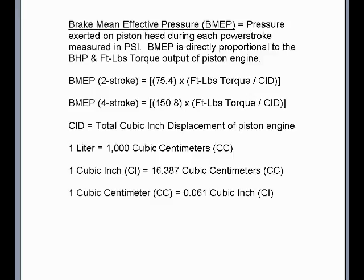The same is true for the four-stroke engine, except you multiply the ratio of foot-pounds torque output at a given RPM divided by the cubic inch displacement times 150.8. CID stands for total cubic inch displacement of a piston engine. One liter equals 1,000 cubic centimeters. One cubic inch equals 16.38 cubic centimeters. One cubic centimeter equals 0.061 cubic inches. This makes it easy to convert liter displacement of a piston engine into cubic inches using this formula.